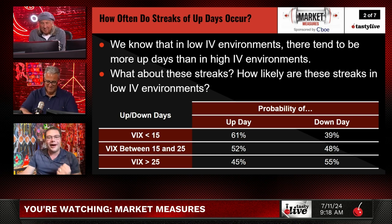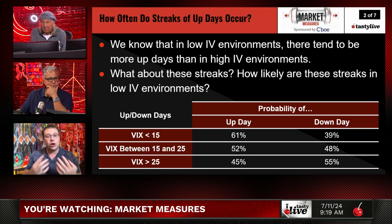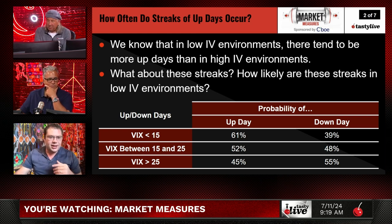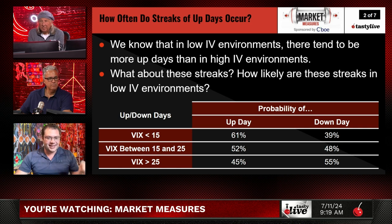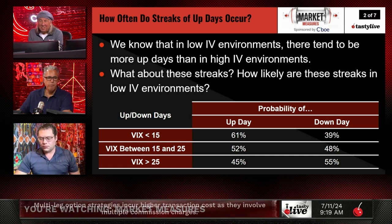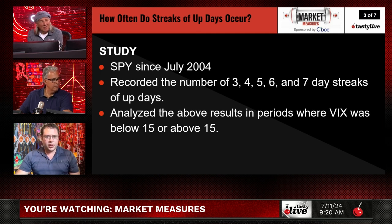Absolutely, Tom. We know that in low IV environments, where we are right now, the distribution of up versus down days is different. We know the long-term average is about 53% to the upside. But when you separate by IV, you get a skewed distribution — more up days in low IV and more down days in high IV. We're using the VIX to gauge it, and this translates to IV rank less than 20 for low IV and IV rank greater than 30 for higher IV environments. So we did a study going back almost 20 years, recording the number of three, four, five, six, and seven-day streaks of up days, analyzed in periods when the VIX was below 15 and above 15.